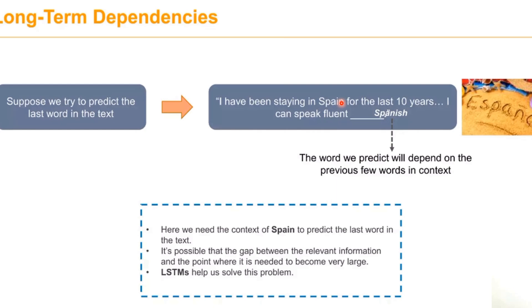When Spain is not provided, we can't predict this well. It becomes impossible when the gap between the relevant information and the point where it's needed becomes very large. LSTM helps to solve this issue.